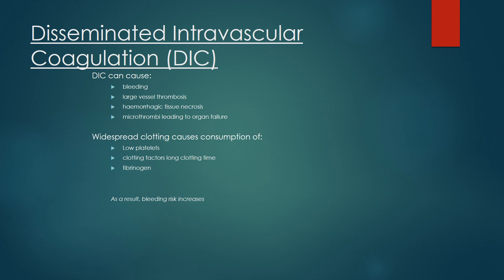DIC causes bleeding, large vessel thrombosis, hemorrhagic tissue necrosis, and microthrombosis leading to organ failure. Widespread clotting causes consumption of platelets, clotting factors, and fibrinogen, and as a result the bleeding risk increases.